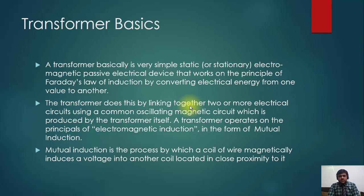The transformer does this by linking together two or more electrical circuits using a common oscillating magnetic circuit produced by the transformer itself. A transformer operates on the principle of electromagnetic induction in the form of mutual induction. The primary coil produces magnetic flux, the secondary coil is cut by this flux. Mutual induction is the process by which a coil of wire magnetically induces voltage into another coil located in close proximity.